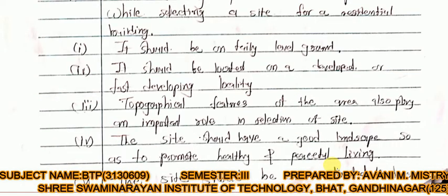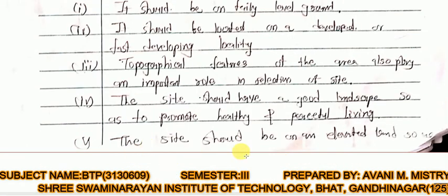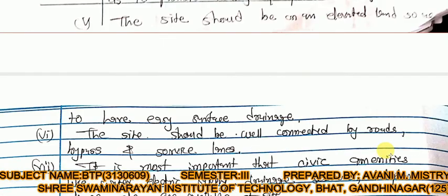The site should have a good landscape so as to promote healthy and peaceful living. The site should be on elevated land so as to have easy surface drainage. If your plot is on elevated land, water due to rainfall or precipitation will drain away easily rather than accumulating.